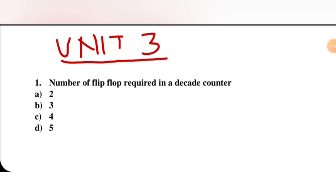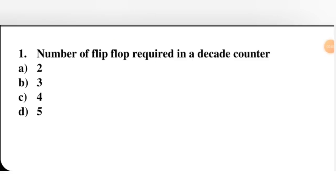In this video lecture on digital electronics, I am going to start MCQs for Unit 3 sequential circuits. In this video I will discuss questions on counters. The first question is: number of flip-flops required in a decade counter. First, we need to know what decade means — decade means 10, meaning the counter we design can count 10 clock pulses or 10 states.